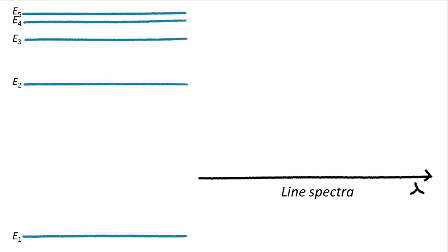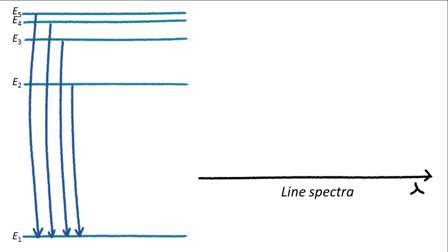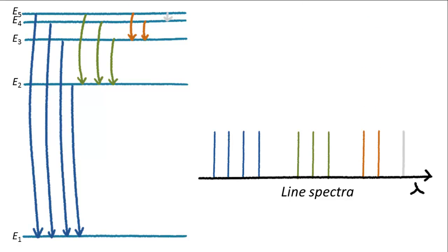For example, say this atom has these five energy levels. Since there are only ten different possible down transitions, there are only ten different possible photon energies, resulting in ten discrete spectral lines. That's why the emission spectra are discrete lines and not continuous bands.